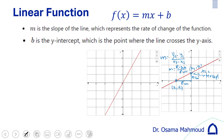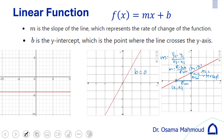When B equals 0, the y-intercept is at the origin, so your line will go through the origin. If M equals 0, then Y equals B, which is a constant — we call this a constant function. For example, Y equals minus 4 is a horizontal line.